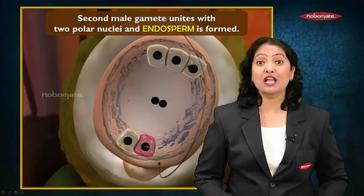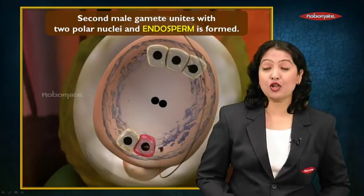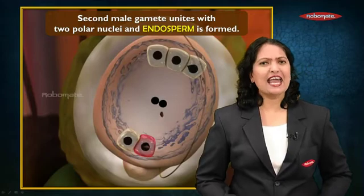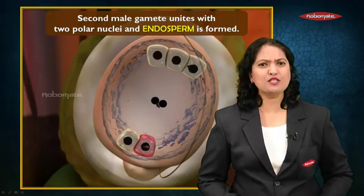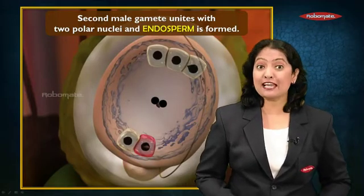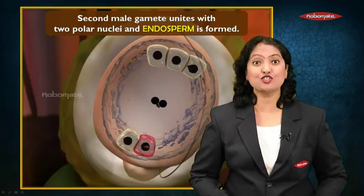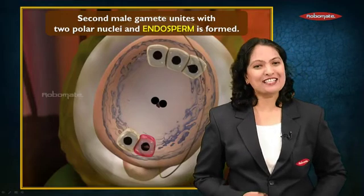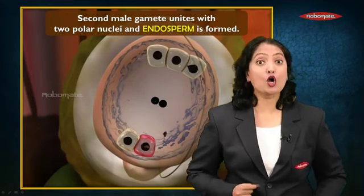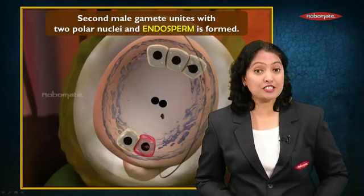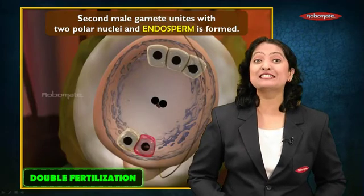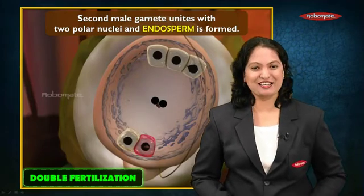The second male gamete unites with the two polar nuclei and endosperm is formed — this is the second fertilization. Because there are two fertilizations in flowering plants, this is called as double fertilization.